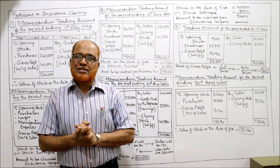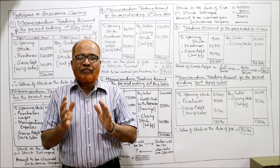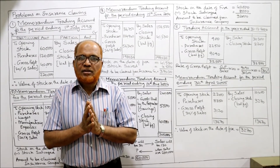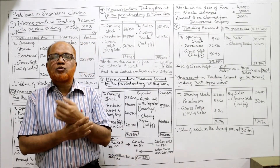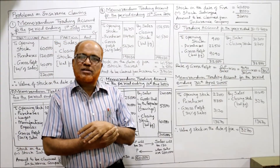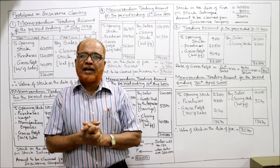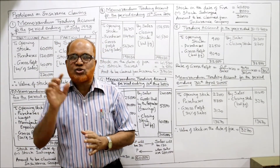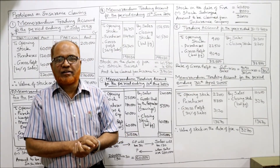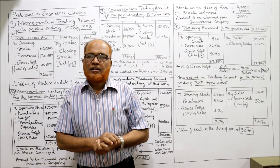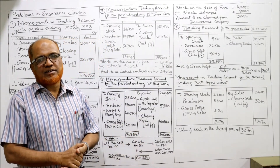We have now discussed five problems. By making a memorandum trading account we can find out the value of stock on the date of fire and thereby calculate the claim to be lodged with the insurance company.